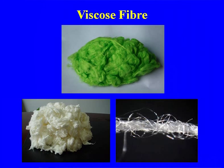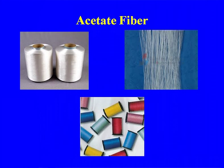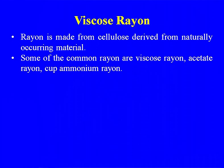You can see the viscose fiber — how it looks, its brightness, and the comfort it provides. The use of viscose in textiles is increasing day by day. This is also the acetate fiber, which also has a silk-like appearance. Rayon is made from cellulose derived from naturally occurring material, especially wood pulp. The common rayons are viscose rayon, acetate rayon, and cuprammonium rayon.